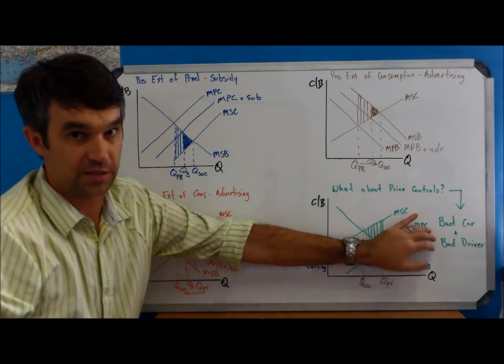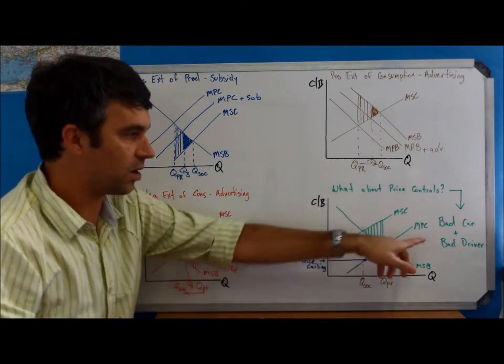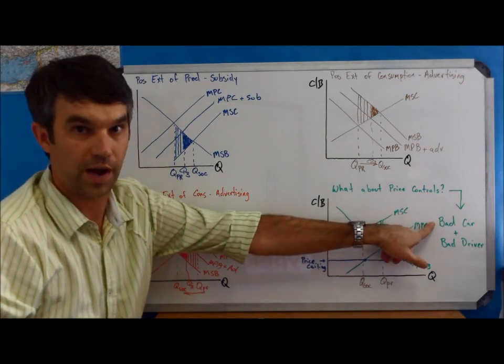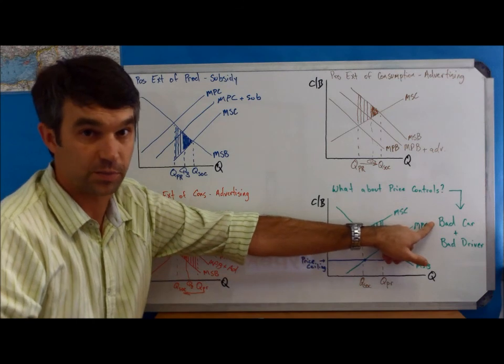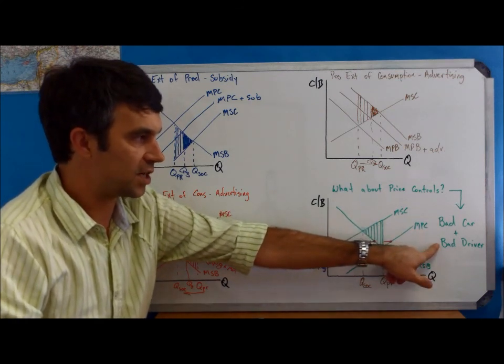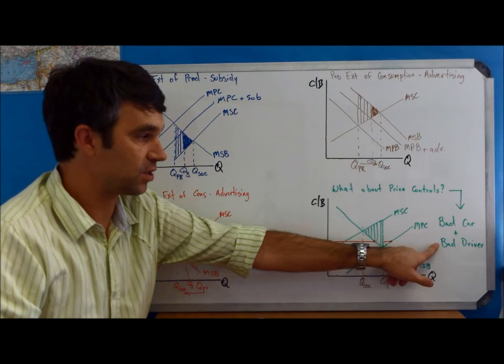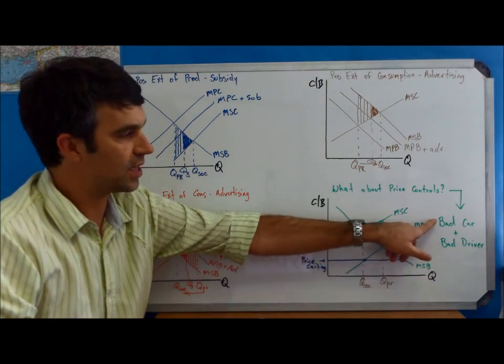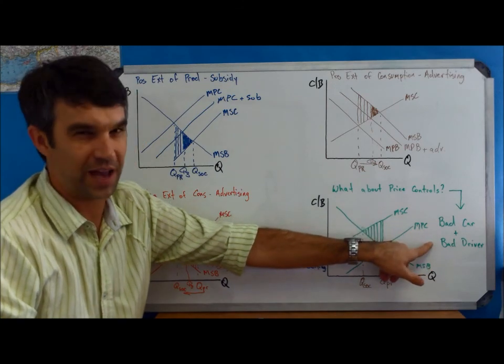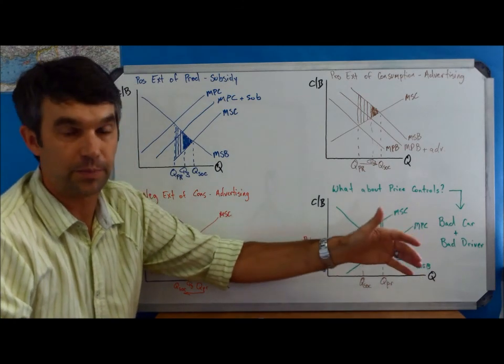I make the analogy of this. When we talk about market failure, we're saying the car isn't running right. The car's not driving right. Maybe the brakes aren't working the way they're supposed to be working. Well, when we talked about government intervention, we said, especially for price controls, the government doesn't really know what it's doing. So now we're taking a bad car and putting a bad driver into it. That seems to be a pretty bad idea.